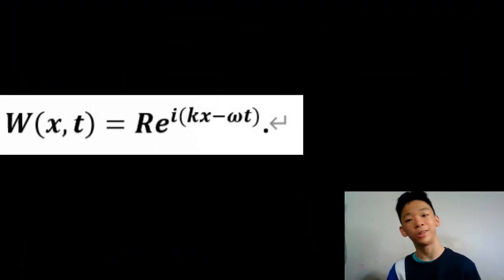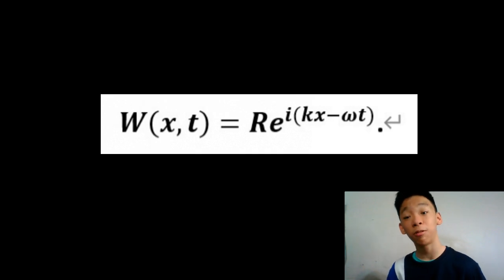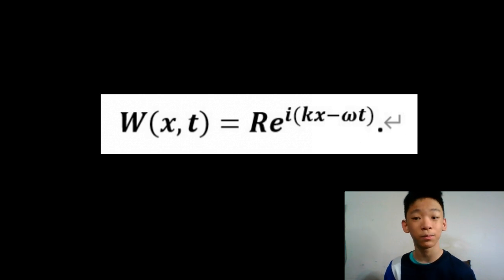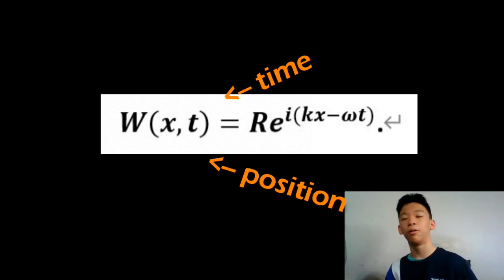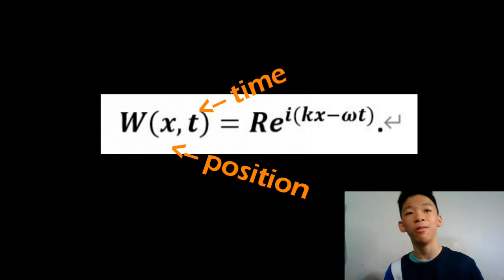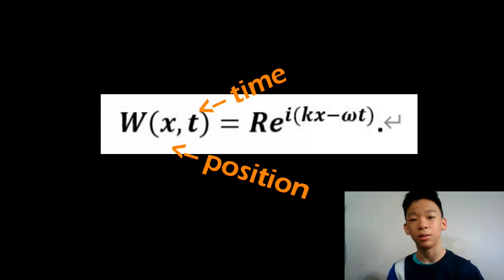One night when I was studying physics, a thought came into my mind — a possible link between simple harmonic motion, Euler's formula, and quantum physics. Let me introduce you to the wave function. This function tells you approximately where a particle would be at any moment in time in the quantum world, where x is the position and t is any moment in time. This is a very important function in quantum physics.